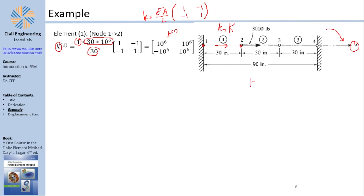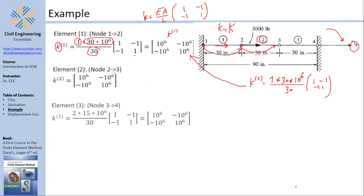For element 3, connecting nodes 3 and 4, the problem multiplied the area by two and divided the elastic modulus by two, so the product AE/L yields the same number. Numerically identical to the others — just a small trick in the problem. In real life, the values would differ.